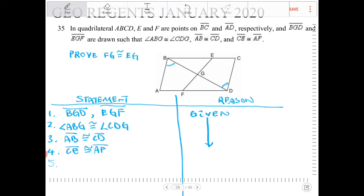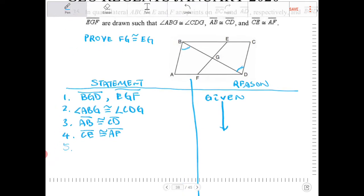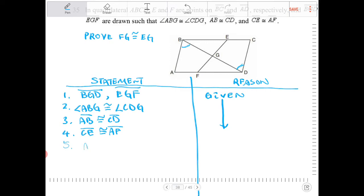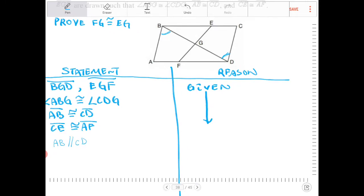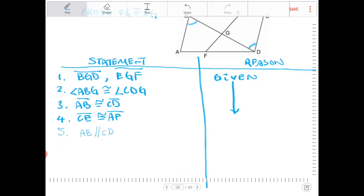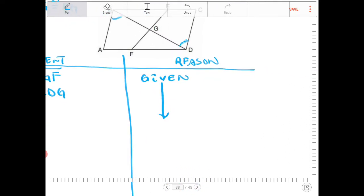So as a result of this given, what I can then say is AB is parallel to CD. And what is this? What's the reason for AB being parallel to CD? Well, the reason is alternate interior angles converse.